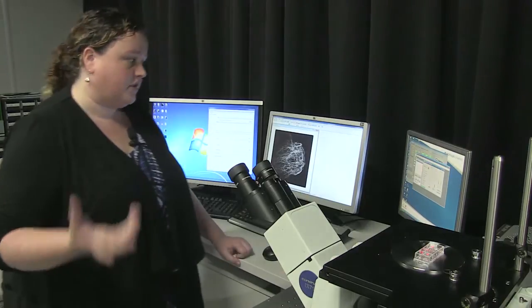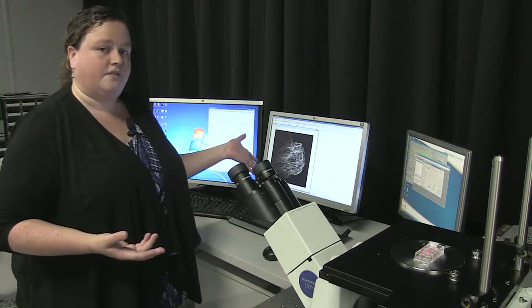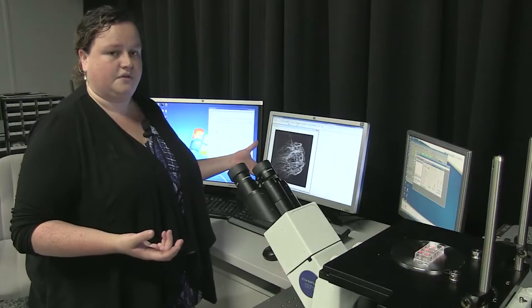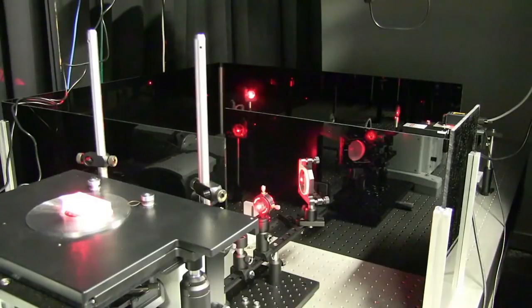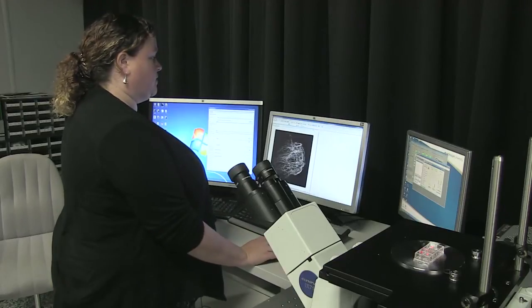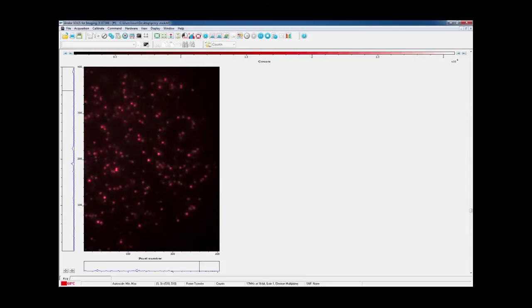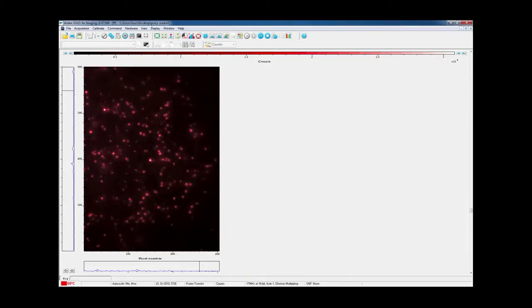You just put it onto the microscope, you have a hunt around until you find something that looks like it's worth imaging so these are very nice microtubules that we found and then all you have to do is turn the laser up and by doing that what you'll start to see after just a few seconds is really nice blinking of your sample.